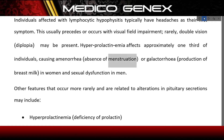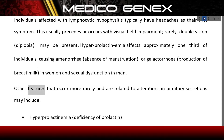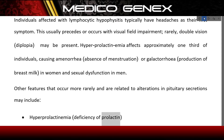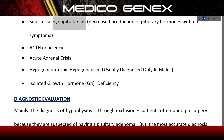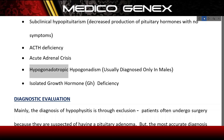Hyperprolactinemia causes amenorrhea (absence of menstruation) or galactorrhea (production of breast milk) in women, and sexual dysfunction in men. Other rarer features related to alterations in pituitary secretions include deficiency of prolactin, subclinical hypopituitarism (decreased production of pituitary hormones with no symptoms), ACTH deficiency, acute adrenal crisis, and hypogonadotropic hypogonadism, usually diagnosed only in males.